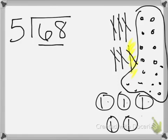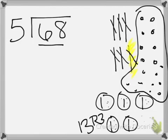They distribute the ones — counting out 1 through 15 into the groups — and then realize they can't put the remaining 3 in equally. So they have 3 left out. They would normally come up with 13 remainder 3 as their answer, using base 10 blocks to model.